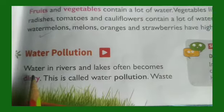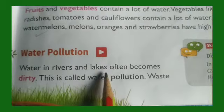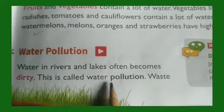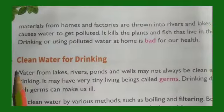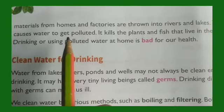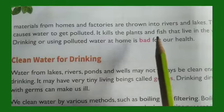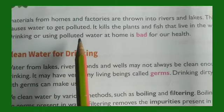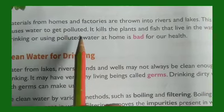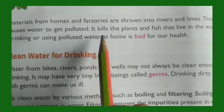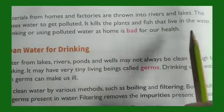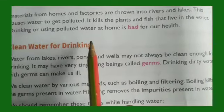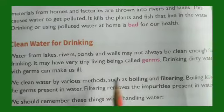Water pollution: Water in rivers and lakes often becomes dirty — this is called water pollution. Waste materials from homes and factories are thrown into rivers and lakes, and this causes water to get polluted. Polluted water kills the plants and fish that live in it.